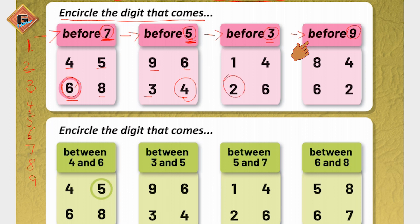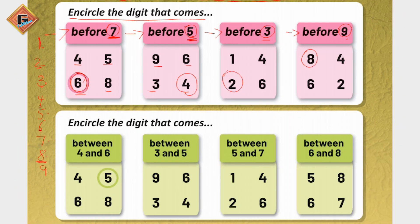And the last one — we have number nine. Before nine, what comes? One, two, three, four, five, six, seven, eight, nine — number eight comes before nine. So we will circle number eight. Our 'before' concept is now clear.